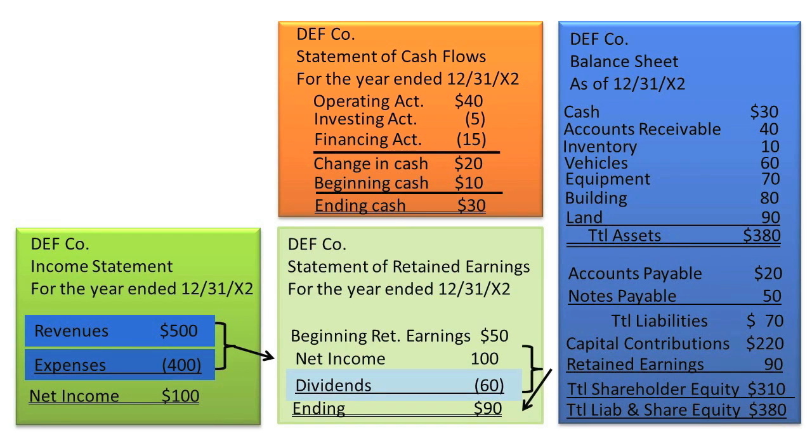Nominal accounts are temporary equity accounts, such as revenues, expenses, and dividends, that caused retained earnings to change during the year. All nominal accounts are closed into retained earnings at the end of each year.